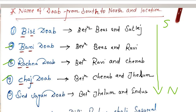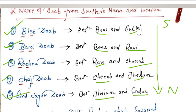Our first doab is Bist doab, found between the Beas and Sutlej rivers. Our next doab is Bari doab, between Beas and Ravi. Next is Rachna doab, between Ravi and Chenab river. Next is Chaj doab, between Chenab and Jhelum river. And our last important doab is Sindh Sagar doab, situated between Jhelum and Indus river.